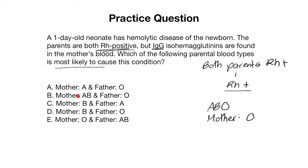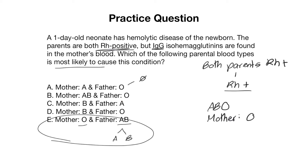Looking at the answer choices, only choice E has mom listed as blood type O and father as blood type AB. Here, dad can pass on either an A or B antigen to the fetus, which can be perceived as foreign by mom during pregnancy. Answer choices where dad is listed as blood type O are incorrect because dad would not give the fetus any A or B antigens perceived as foreign. Answer choice C, with mom as type B and dad as type A, could technically cause ABO incompatibility, but the question asks for the most likely cause, which occurs when mom is blood type O.